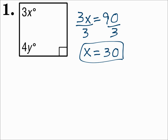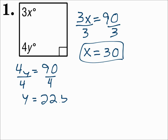Since each angle is a right angle, then 4y also equals 90. Divide both sides by 4 and y is 22.5. If a parallelogram has one right angle, then it has four right angles.